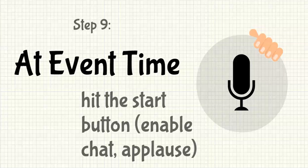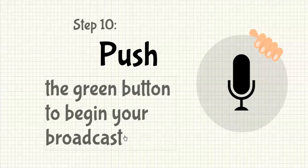At the time of the event — step nine — get everything in position, take a deep breath, and hit the start button. Before you start, you can also enable the chat, applause, or other add-ons for the webinar. Then step ten: hit the green button to begin your broadcast. The great thing is you don't have to worry about forgetting to push the recording button, which has happened to me before — getting halfway through a webinar and realizing you weren't recording is the worst.